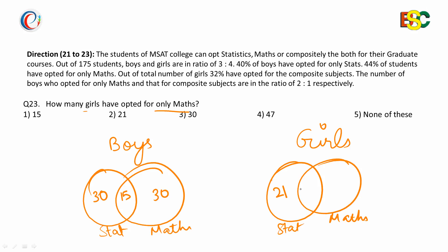Then 32 have opted for both and 47 have opted for only Mathematics. The question asks how many girls have opted for only Maths. They are 47, so option number 4 is the correct answer. You can see the importance of Venn diagrams. Thank you.